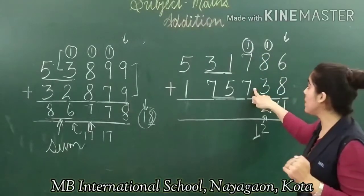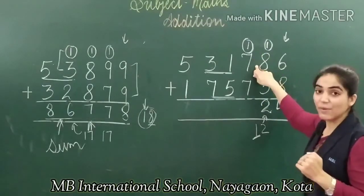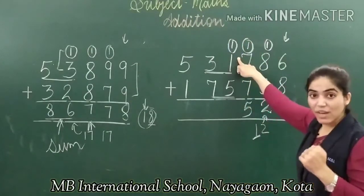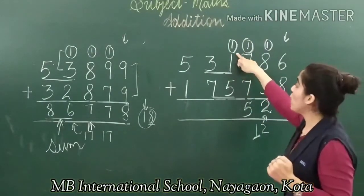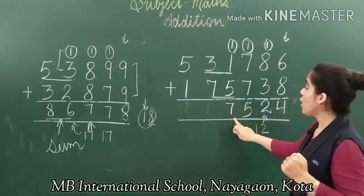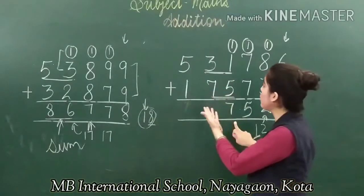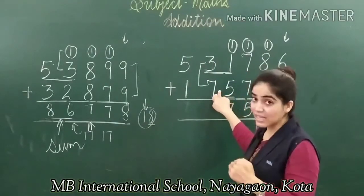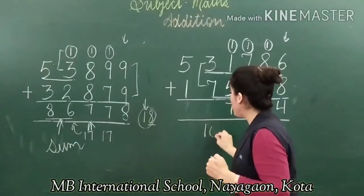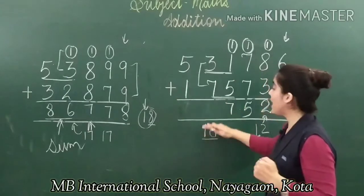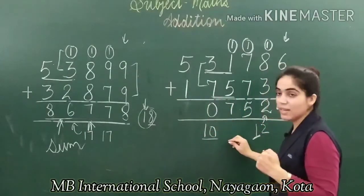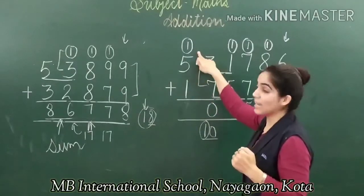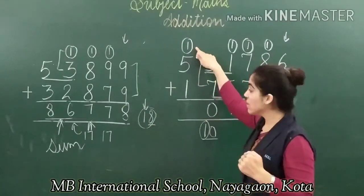Now we have three addends because we add the carry too. One plus seven is eight, eight plus seven is fifteen: five goes below and one is carried. Then one plus one is two, two plus five is seven — single digit, no carry. Three plus seven is ten: zero goes below and one is carried. Five plus one is six, six plus one is seven.